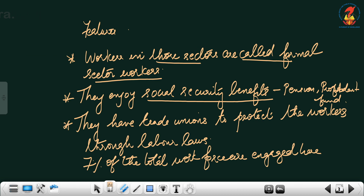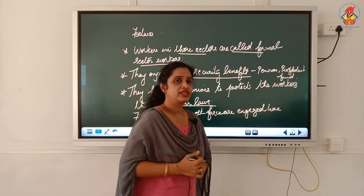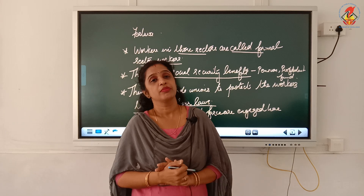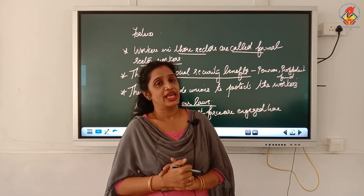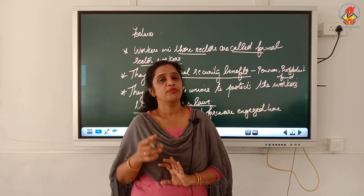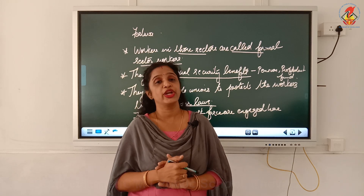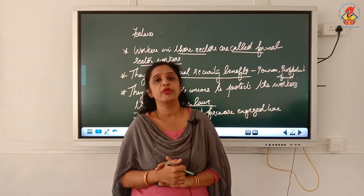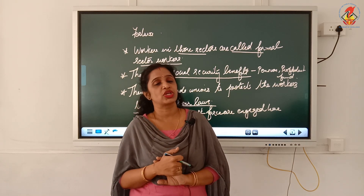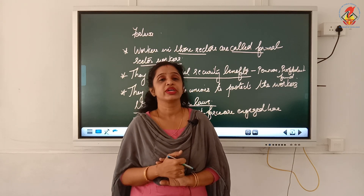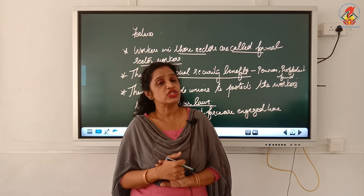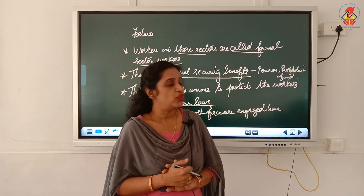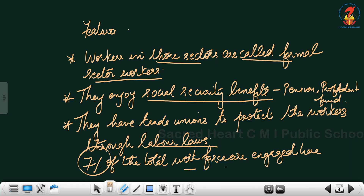Formal sector establishments also have trade unions to protect workers through labor laws. All problems related to the workers are addressed by the trade unions to the management. The trade union is formed by a group of workers within a particular establishment who address the problems of the rest of the workers there. Only 7 percent of the total workforce is engaged in this formal sector.